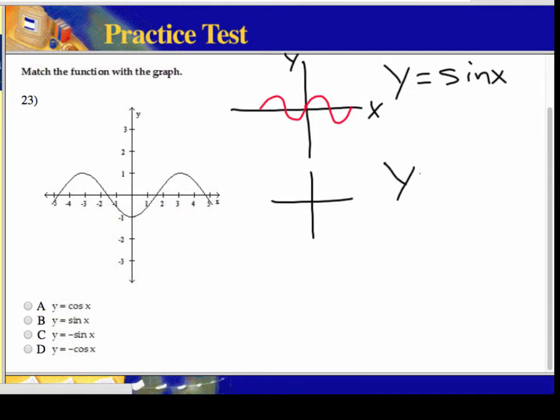That if I say y equals cosine of x, it's the same wave function but cosine is the co-function of sine. So instead of starting at the origin, it starts at positive, it starts at the point zero comma one where this one starts at zero zero. Right, now it's not one of those.